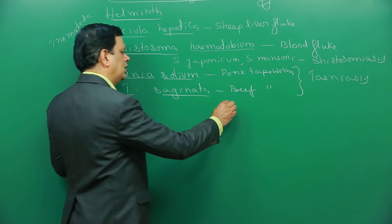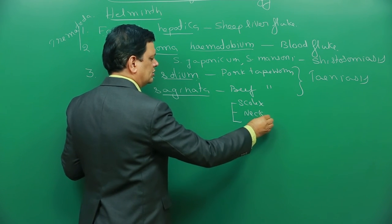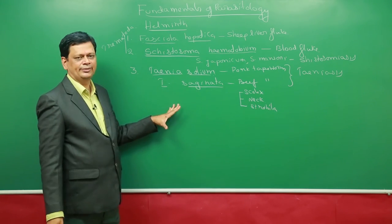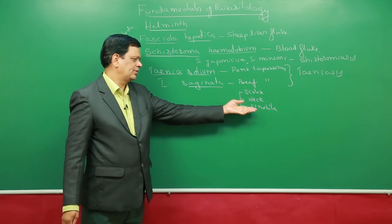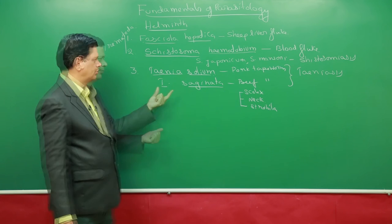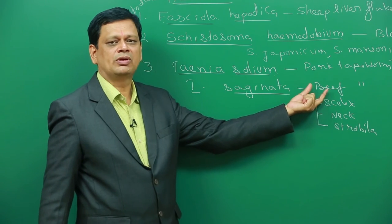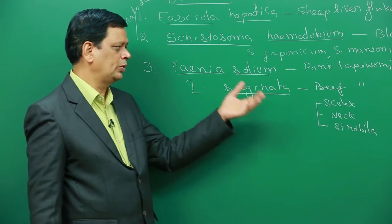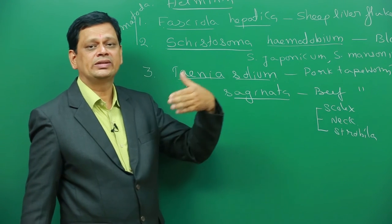In both, their body will have a small head-like structure, an unsegmented structure and a chain of segments called strobila. For example, Taenia solium has 900 segments. All segments are proglottids, they come under strobila. But what is difference in Taenia saginata, cattle, cows, buffaloes, etc., they act as secondary hosts. Those who consume improperly cooked flesh of beef, they get the infection.